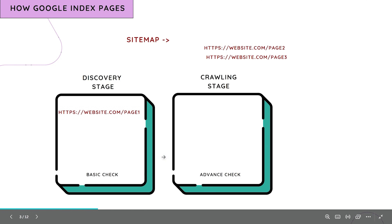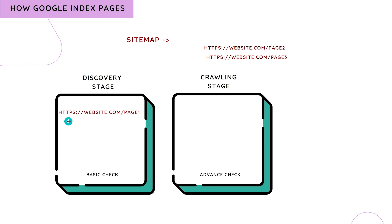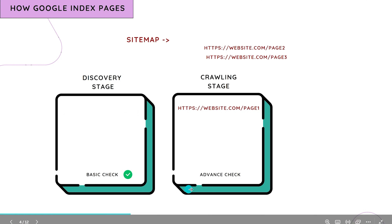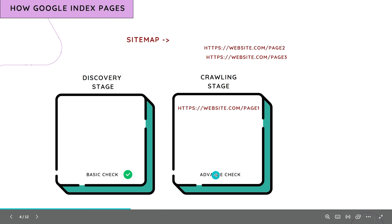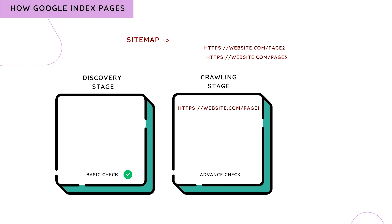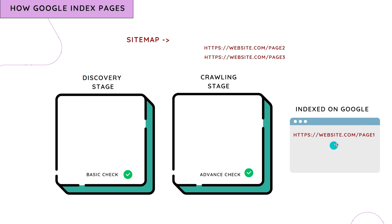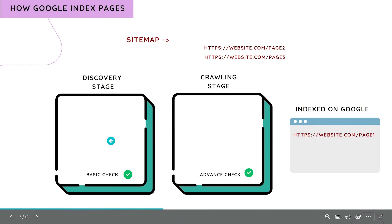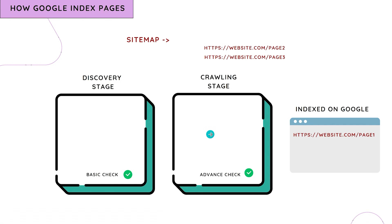Taking page one as an example: it first comes to the discovery stage where basic checks happen. When all basic checks are cleared, it moves to the crawling stage where advanced checks happen. When the advanced check is cleared, the page gets indexed on Google and will appear in search results for relevant queries.